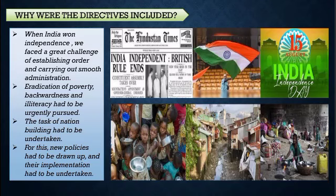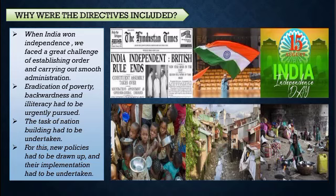It was very difficult to establish these things. First of all, we needed to remove poverty — that was a major task. Then, whatever backwardness was there in society, the discrimination between rich and poor, superior and inferior, gender inequality, and especially illiteracy needed to be addressed. Education was not given importance at that time, so all these things needed to be improved. The task of nation building had to be undertaken and new policies needed to be implemented.